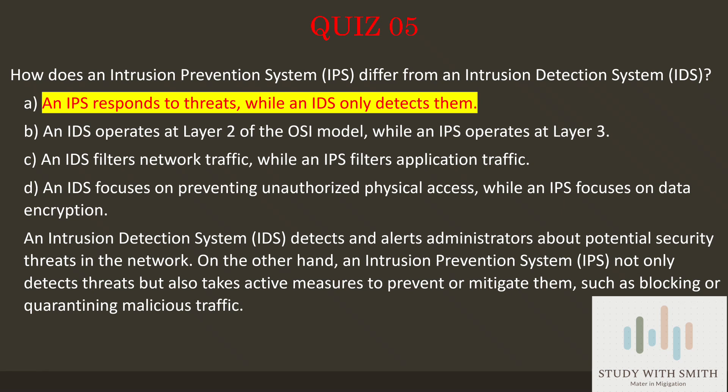An Intrusion Detection System, IDS, detects and alerts administrators about potential security threats in the network. An Intrusion Prevention System, IPS, on the other hand, not only detects threats but also takes active measures to prevent or mitigate them, such as blocking or quarantining malicious traffic.